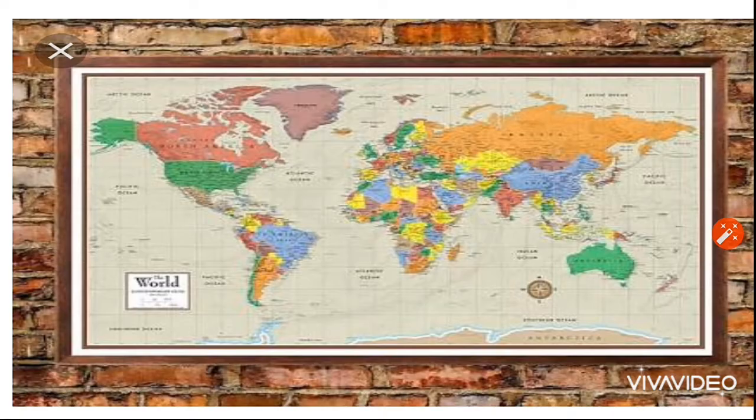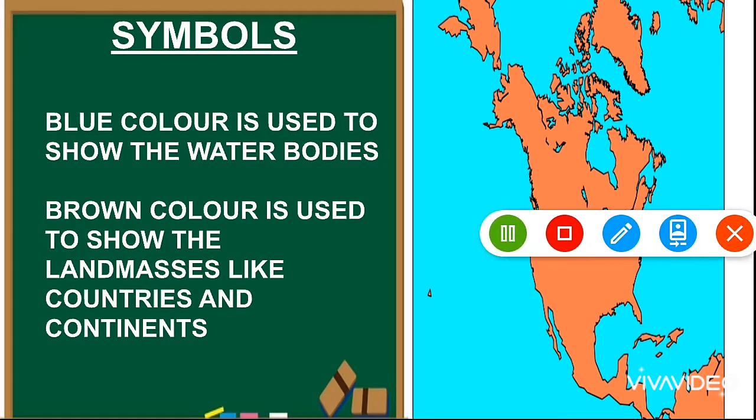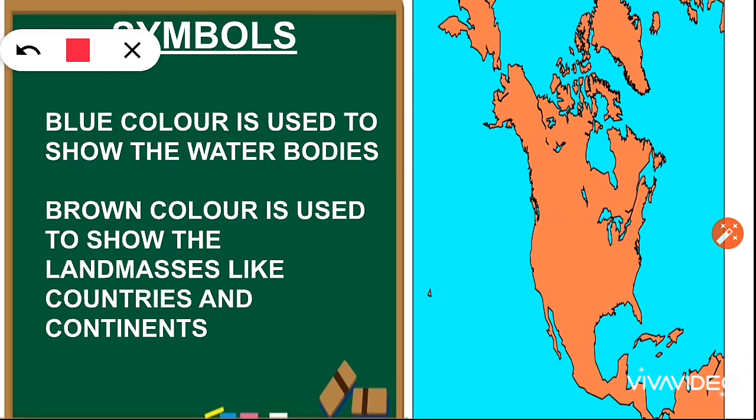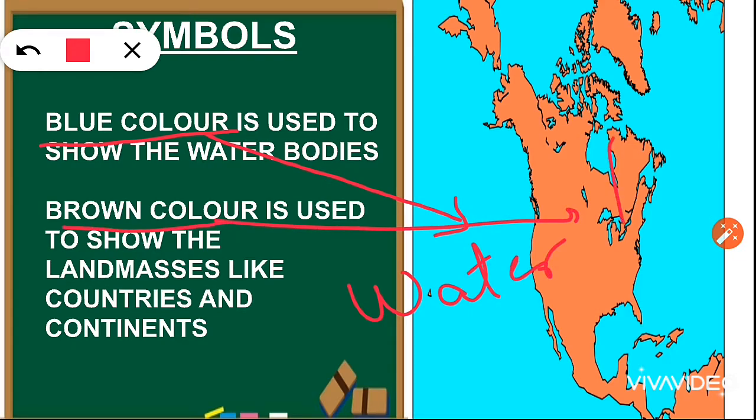Now, let us see about the symbols. There are some symbols that are used on the map to make the reading of the map easy. For example, blue color on the map is used to show the water bodies, and brown color is used to show the land. There are many other symbols too.